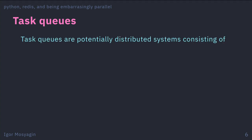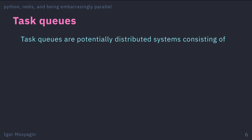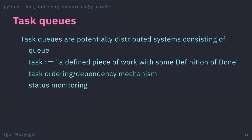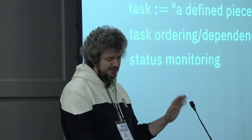Task queues are distributed systems consisting of a few things. First, there's a queue. Then there's a task — some definition of something that needs to be done with a defined result, typically some code. There's task ordering and dependency management: this task needs to run after that one, or these three need to run in a particular order. And you want to monitor if your task is running right, if it's dead, if you need to retry it, and so on.